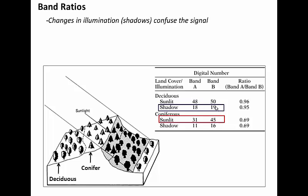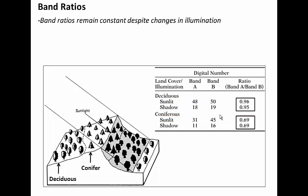Here's where band ratios come in. As long as we measure the ratio between band A and B, that ratio is independent of shadows or the level of sunlight. So regardless of whether it's sunlit or shadowed, deciduous trees always give a ratio near 1. Whereas the conifers give a ratio near 0.7. So that ratio is going to be a more reliable way to distinguish between these surfaces regardless of shadows.